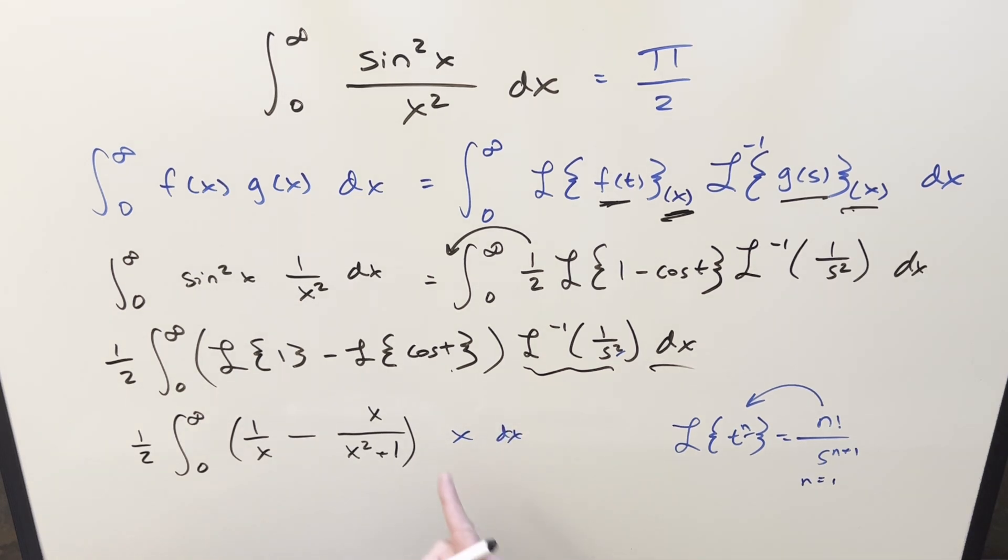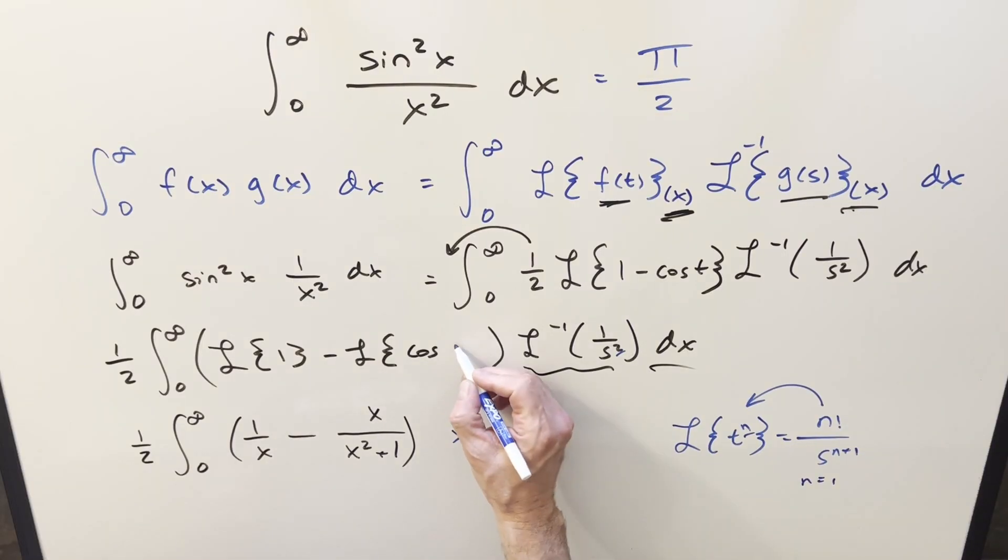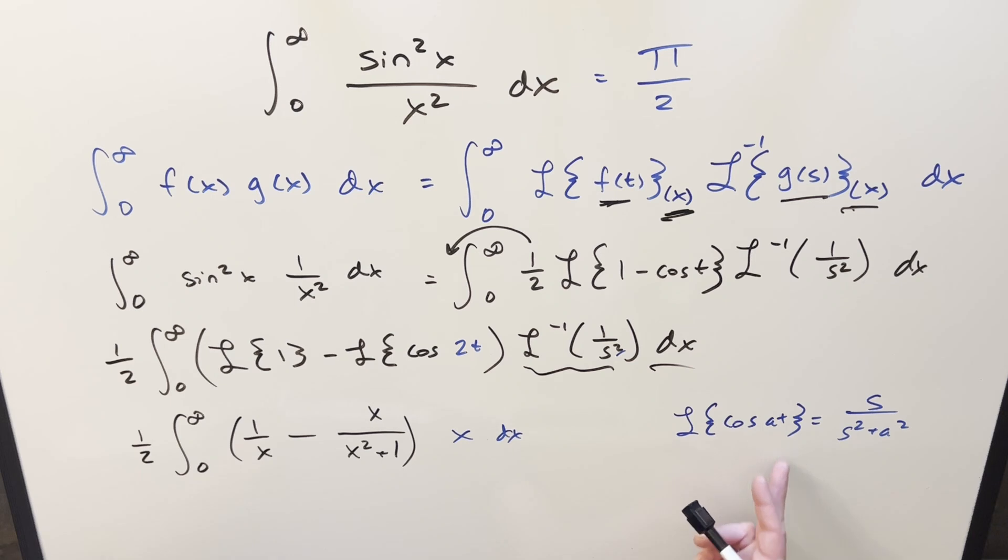And I definitely noticed a mistake. When we simplified sine squared, sine squared, that simplifies to 1 minus cosine 2t. I don't know if I wrote it that way originally, but this needs to be a 2t here. And then we have this formula over here for the Laplace transform of cosine a t. We want a squared, so we want that 2 squared. So right here, so this needs to be 2 squared, or a plus 4.